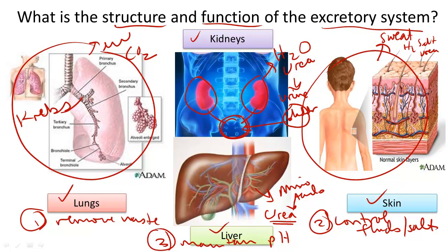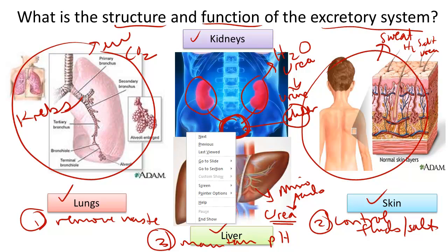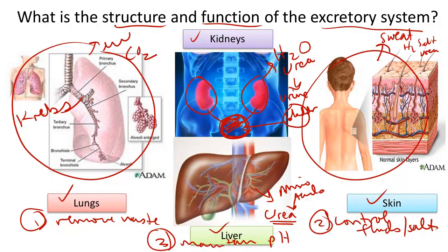The bladder is a stretchy, muscular, hollow organ that holds urine until it's ready to be released. It is released through a tube called the urethra. So hopefully you remember the four parts of the excretory system and their important function in the body.